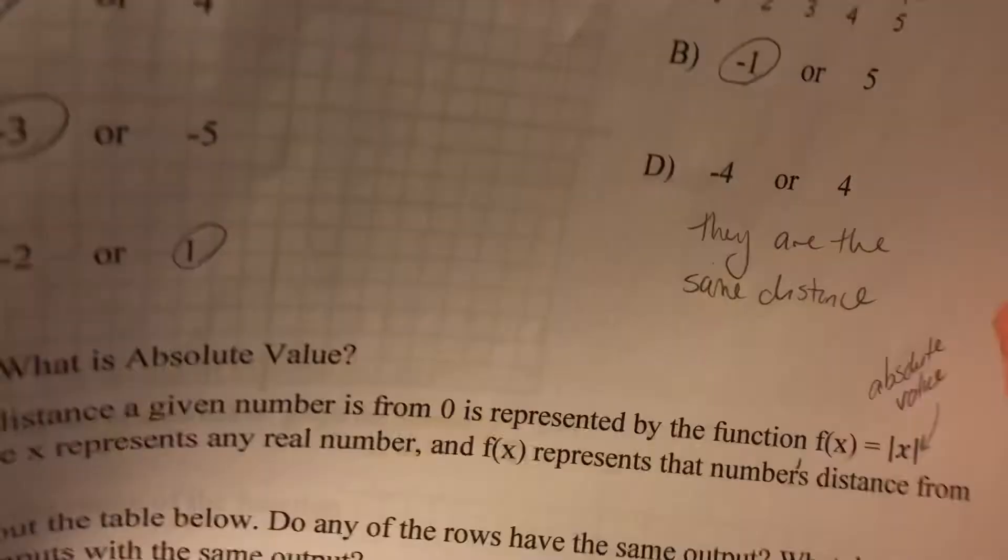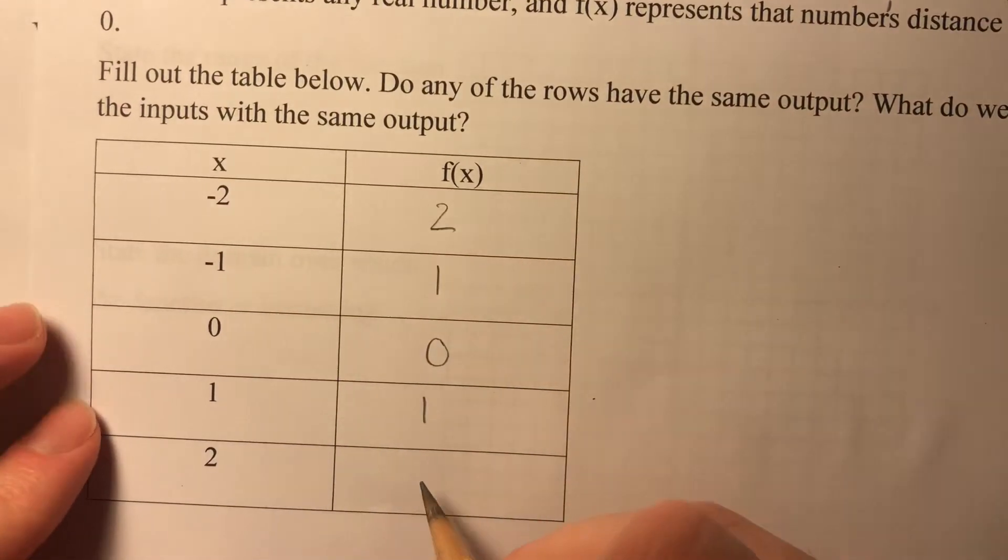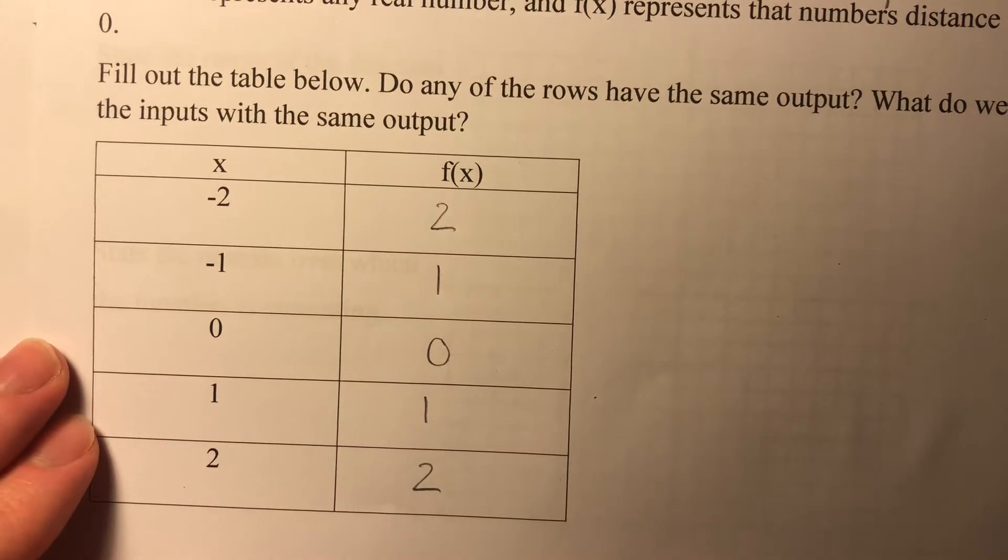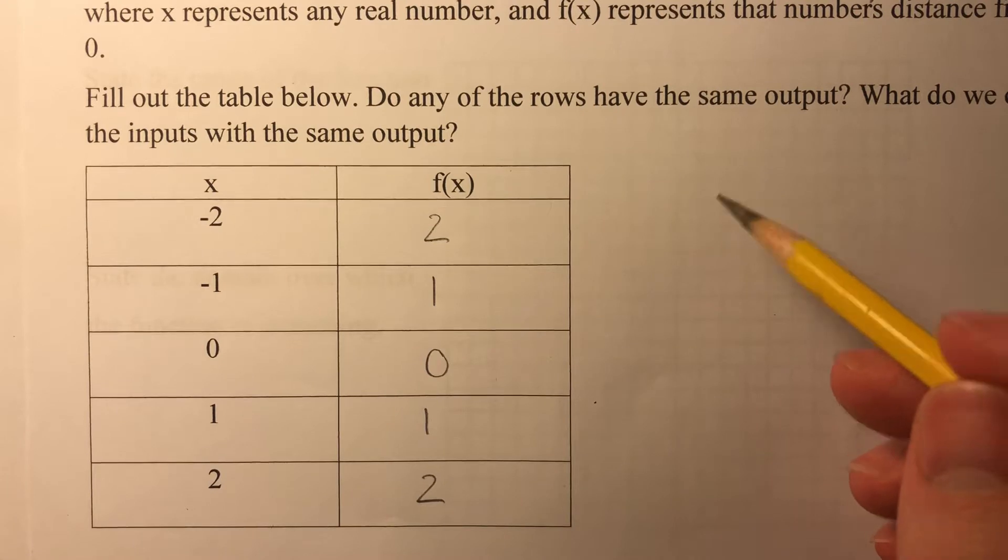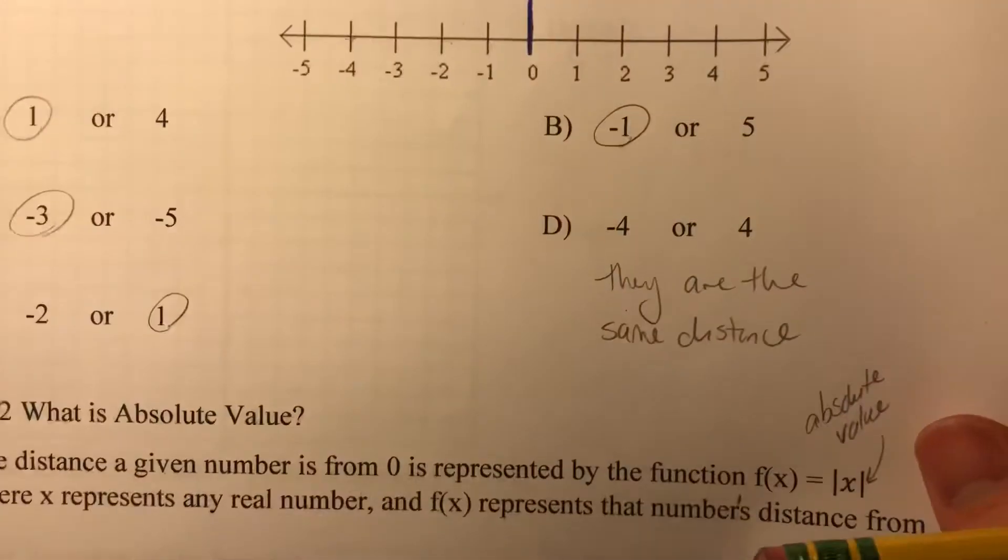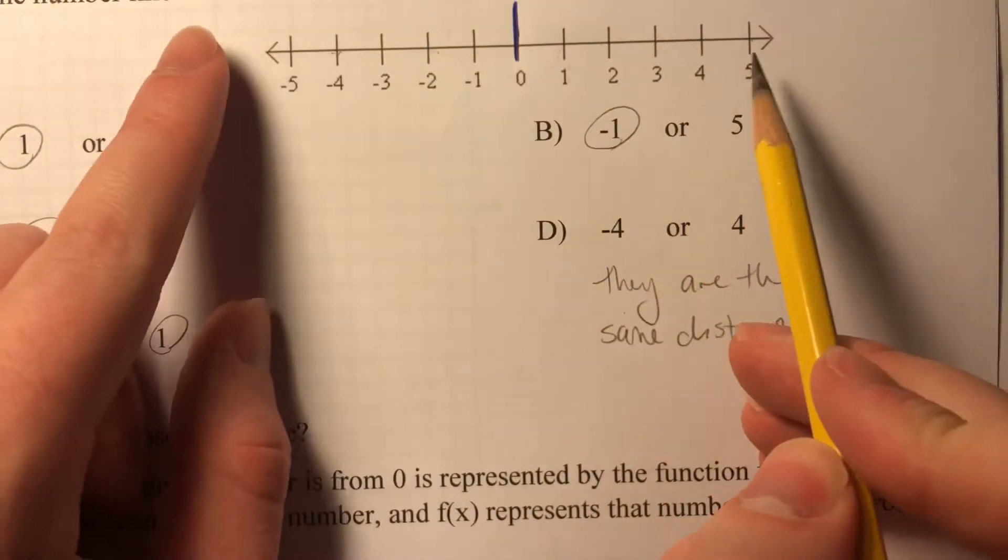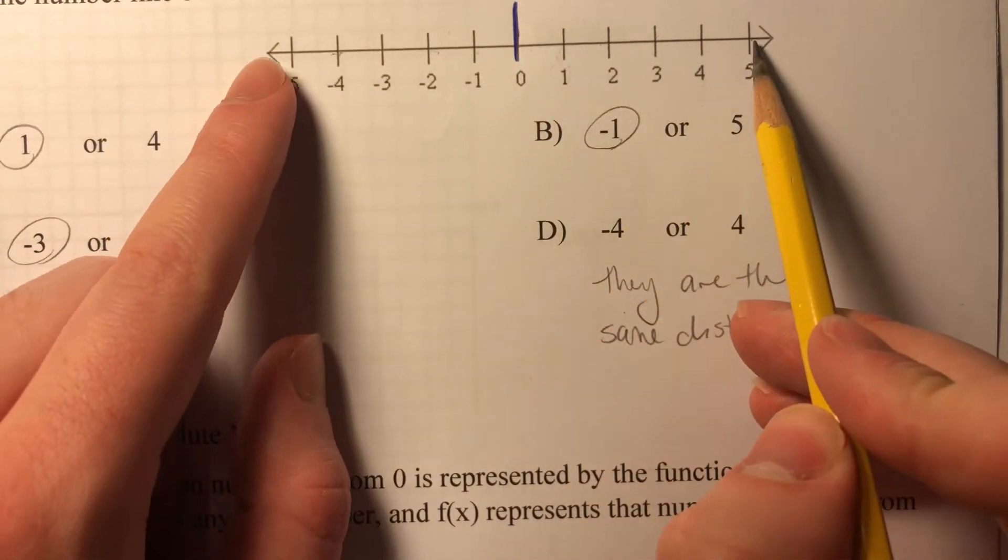1 is 1 unit away, then I can see that 2 is gonna be 2 units away. So do any rows have the same output? Oh, I see negative 2 and 2 have the same output. Negative 1 and 1 also have the same output. It's sort of like it's symmetrical here. No matter how far away you get, if you're a negative or positive version of that number, you're still the same absolute value away.